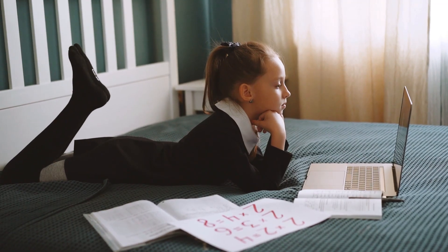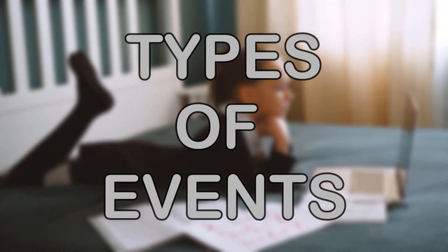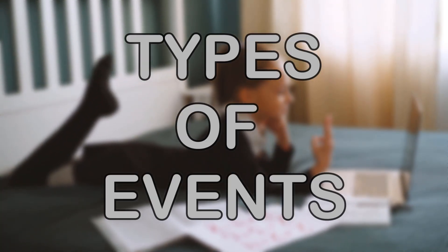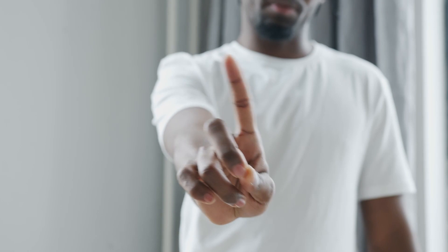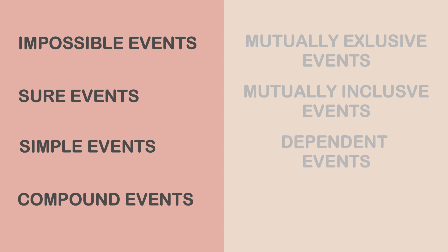In today's video we are going to be talking about the types of events we are going to be meeting in the world of probability. In no particular order, we have the impossible events, the sure events, the simple events, the compound events, the mutually exclusive events, the mutually inclusive events, the dependent events, and independent events.